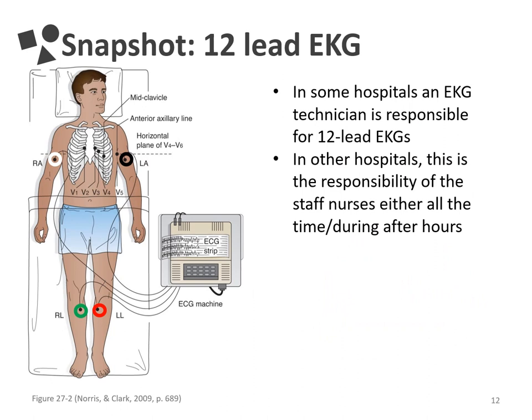We're now going to switch away from continuous EKG monitoring and talk about EKGs that just look at one moment in time. The example we're going to look at is a 12-lead EKG, which in some hospitals a nurse may be responsible for collecting. The placement for the 12-lead is very similar to the 5-lead, except that the leads labeled arm and leg actually go on the arms and legs. There are an additional five V or precordial leads that look at the heart, and these go around the precordial area as you can see in this picture.